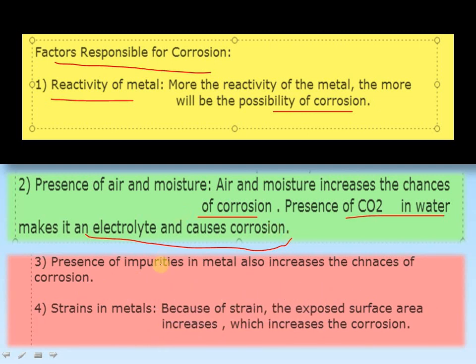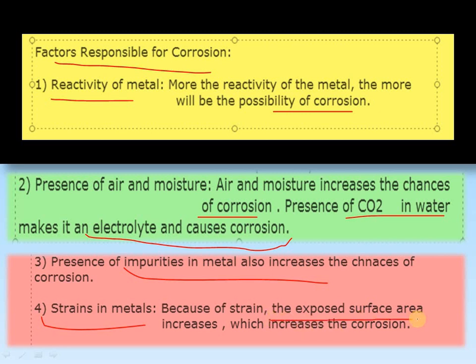The third factor is presence of impurities. If there are impurities in the metal such as sulfur and carbon, they form sulfates and carbonates, which is also a main factor responsible for corrosion. The fourth factor is strains in metal. If there is a strain in metal, the exposed surface area increases, and because of that, corrosion is more likely.